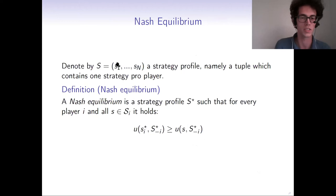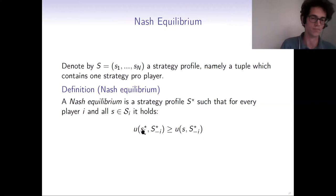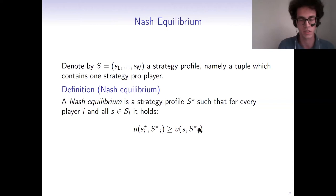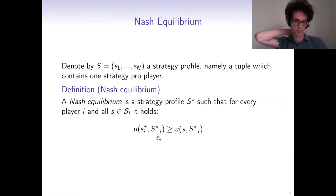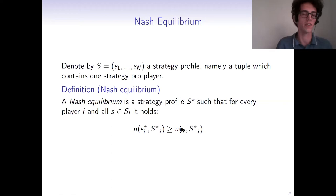Now we generalize the notion of stability for any game. We denote by S a strategy profile, which is a tuple containing one strategy per player. A Nash equilibrium is a strategy profile such that for every player i and all strategies available to player i, the utility function of the current strategy is always at least as large as any other utility function for that player, given that the other players also play the same strategy profile. In other words, no player can improve by unilaterally changing their strategy.